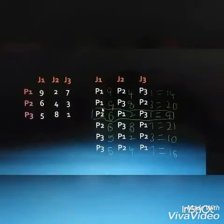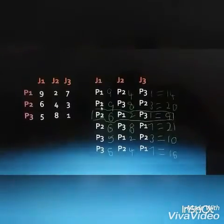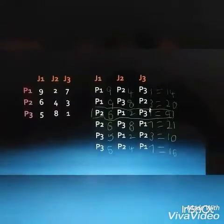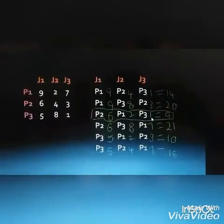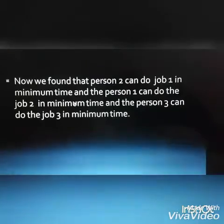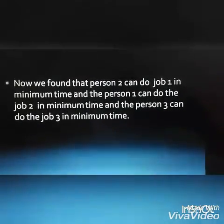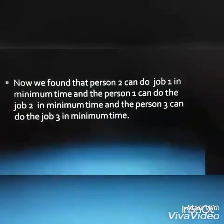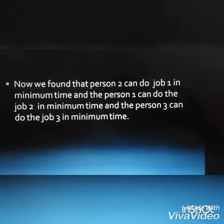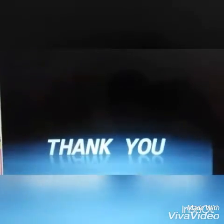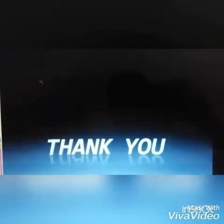The minimum among all combinations is Person 3, Person 1, Person 2 with 6 + 2 + 1 = 9 seconds. So Person 2 will finish Job 1 in 6 seconds, Person 1 will finish Job 2 in 2 seconds, and Person 3 will finish Job 3 in 1 second — totaling 9 seconds. We have solved this example using the assignment problem. Thank you so much for watching.